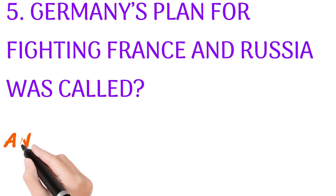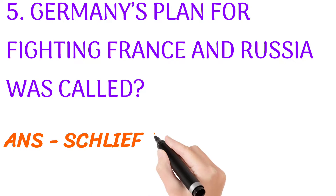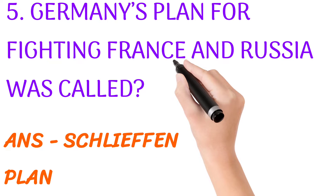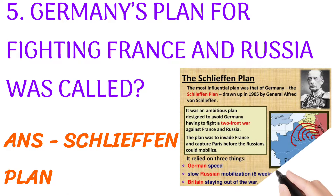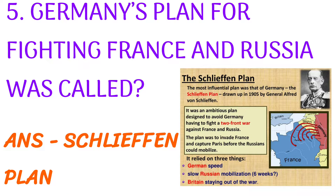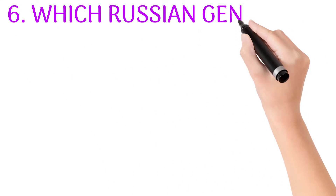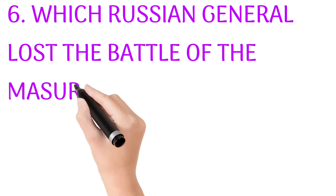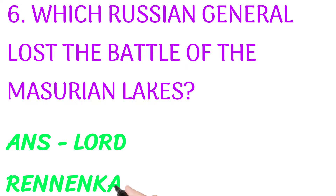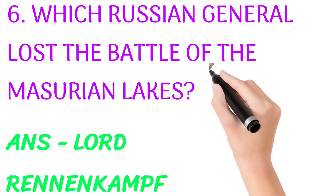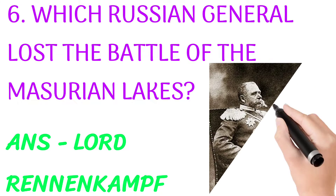Germany's plan for fighting France and Russia was called — answer: the Schlieffen Plan. Which Russian general lost the Battle of the Masurian Lakes? Answer: General Rennenkampf.